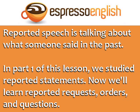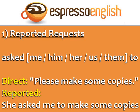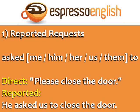Now we'll learn reported requests, orders, and questions. For reported requests, use the structure: asked me, him, her, us, or them to. For example — Direct: 'Please make some copies.' Reported: 'She asked me to make some copies.' Direct: 'Please close the door.' Reported: 'He asked us to close the door.' In the case of reported requests, the main verb does not change.